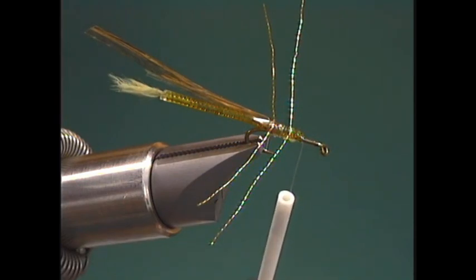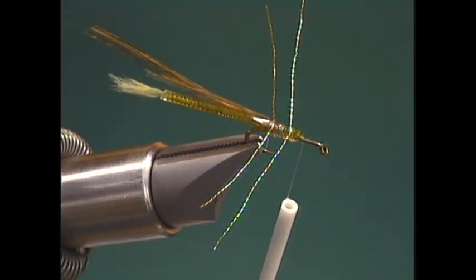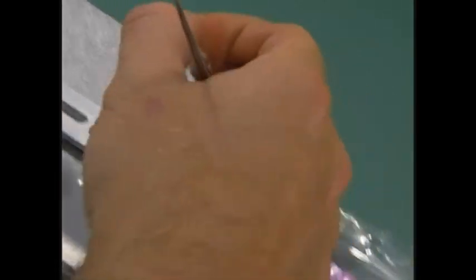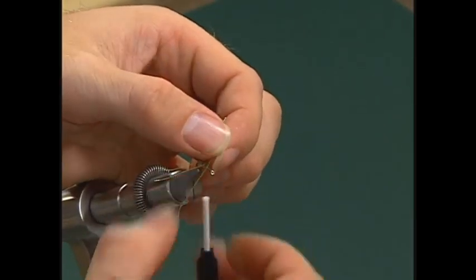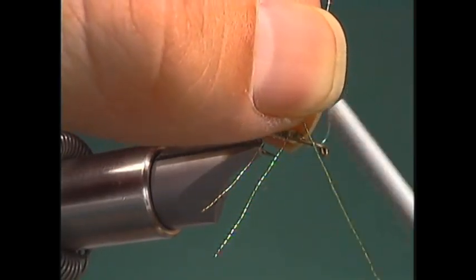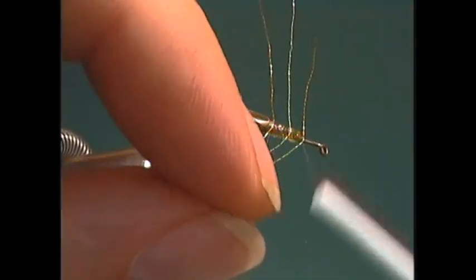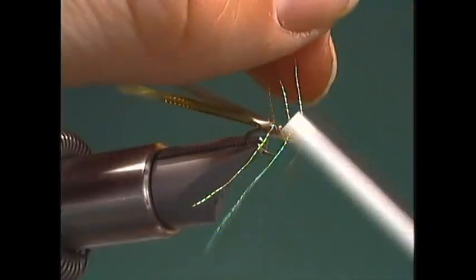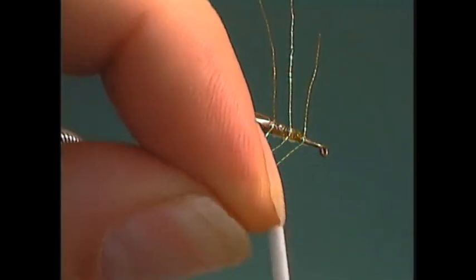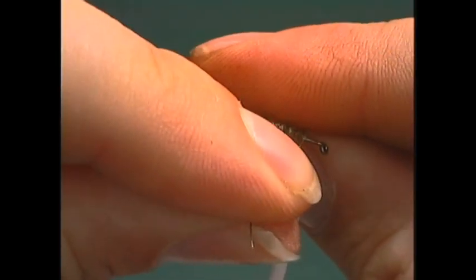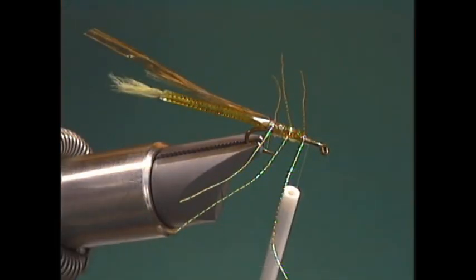Then come right in front of where we cut off the body. Then we'll grab another leg. Again, we'll do more figure eights to tie these in. Then we'll take a couple turns of thread, come up forward, and pull on the legs to kind of even them out a little bit.